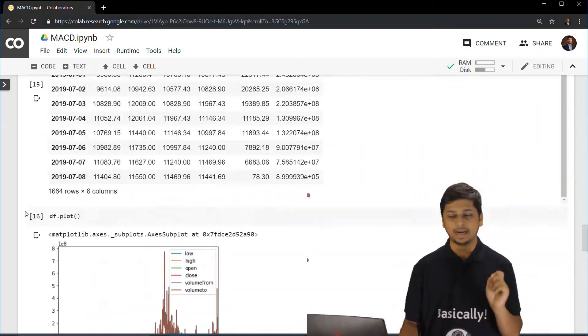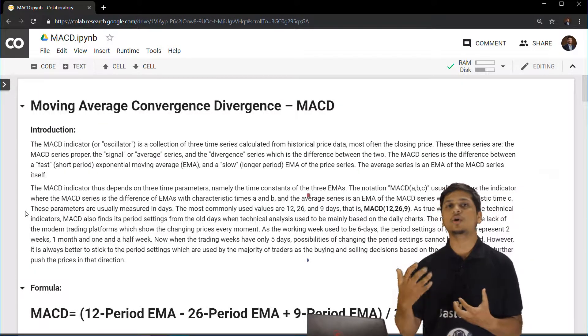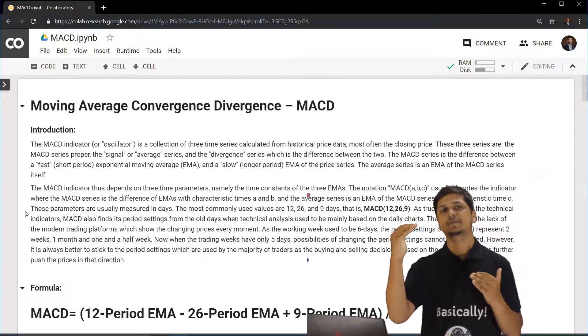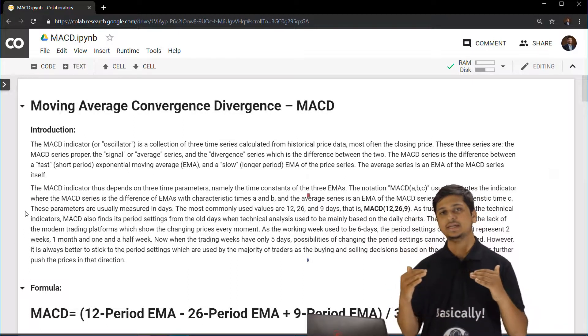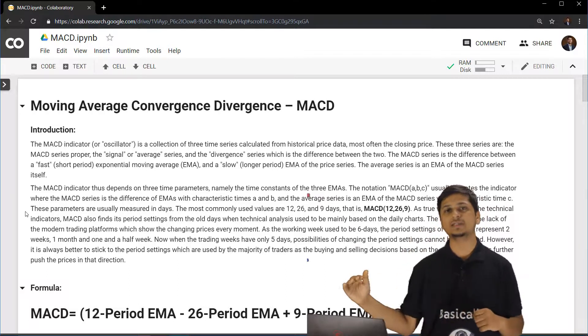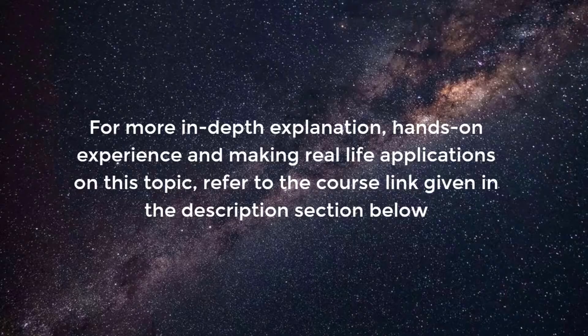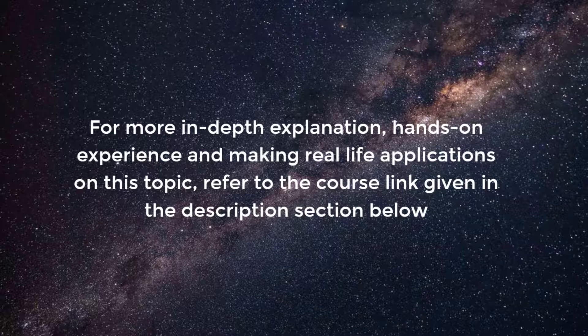Let's revise everything once. MACD is an indicator that acts like an oscillator where you have negative and positive values, and 0 is the central part. If the MACD indicator stays at 0, this means there is no price fluctuation. I hope you found these glimpses from my online course interesting. For a more in-depth explanation, hands-on experience, and making real-life applications on this topic, refer to the course link given in the description below.